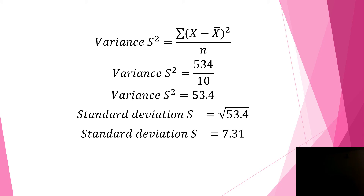So the variance s² equals 534 divided by 10, which gives 53.4. For the standard deviation, we take the square root of 53.4, which gives us 7.31. This means the amount of variability existing in the data set is 7.31. We returned to standard form — (x minus x̄), then squared — and that provides 7.31 as the amount of variability.